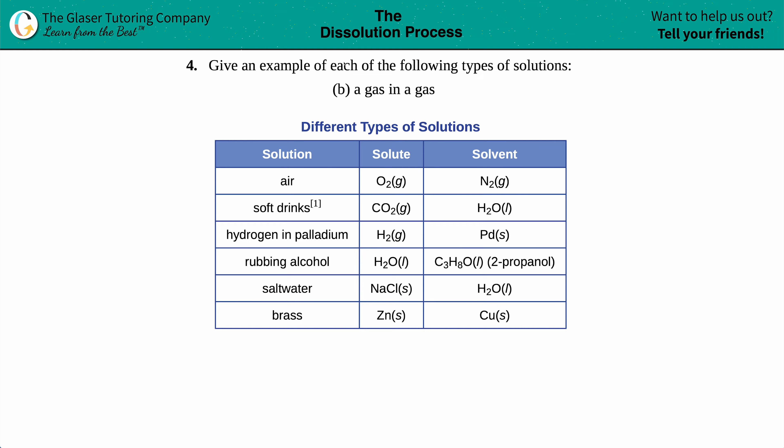Number four: give an example of each of the following types of solutions - a gas in a gas. I have a chart here for the different types of solutions, but we just have to figure out which one corresponds with a gas in a gas. The hardest part here is to figure out which is the solute and which is the solvent.